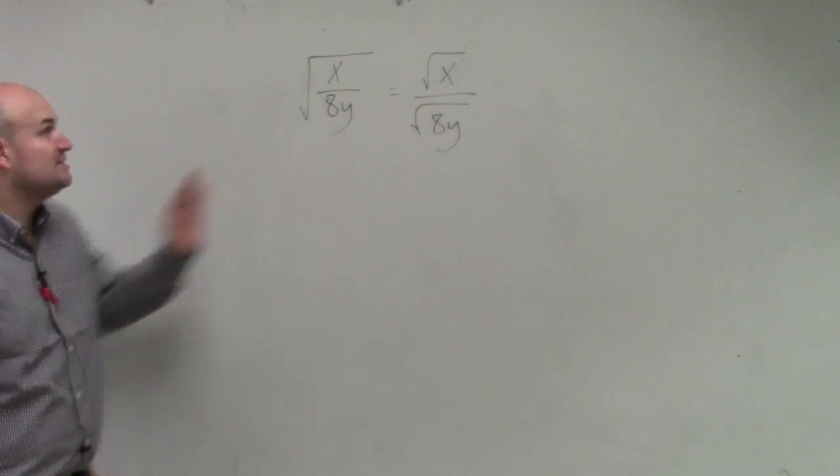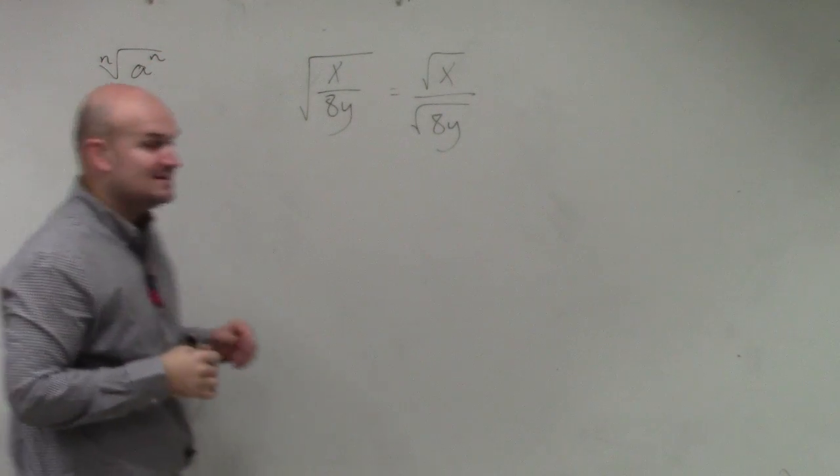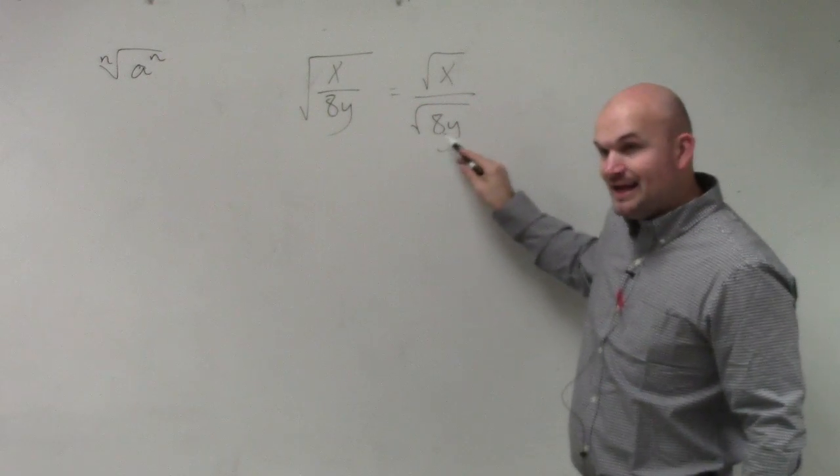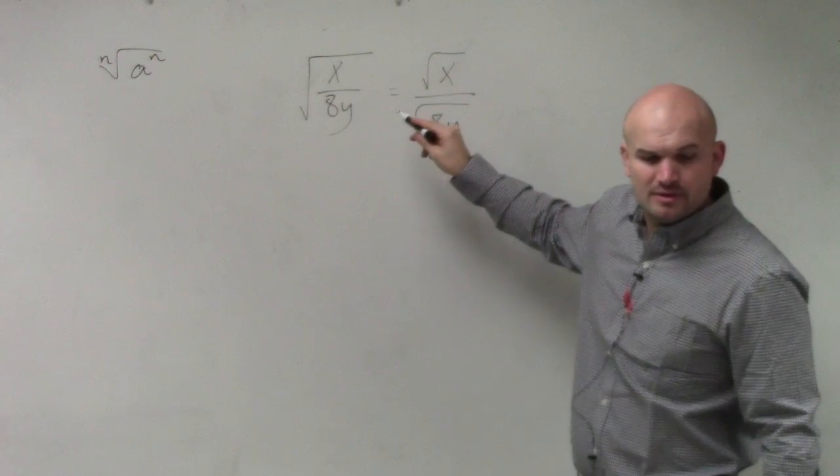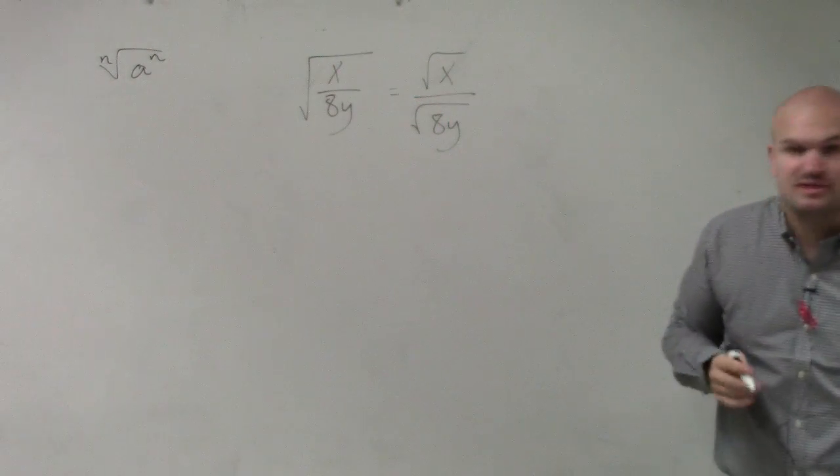So basically, what we need to do then is have the nth root of a to the nth, right? a to the nth power. So we need to be able to write our radicand to the, what is our index in this problem? 2, right? So we need to be able to write 8y to the second power.